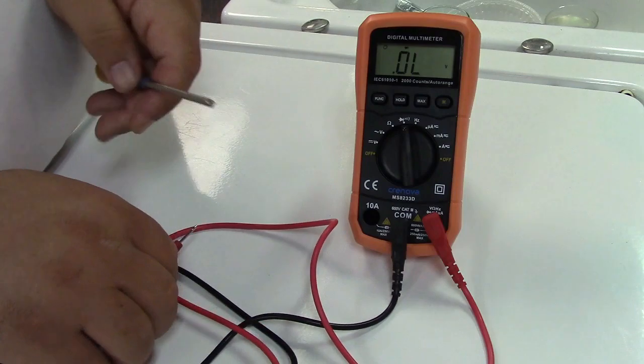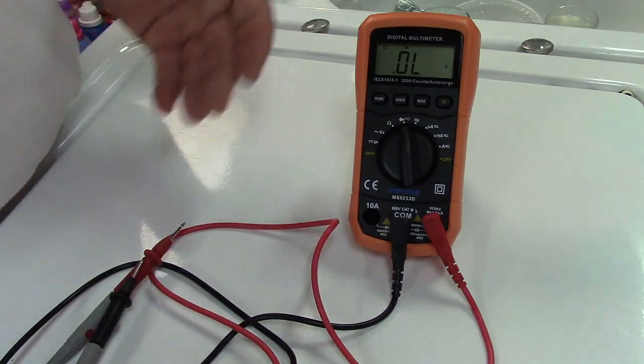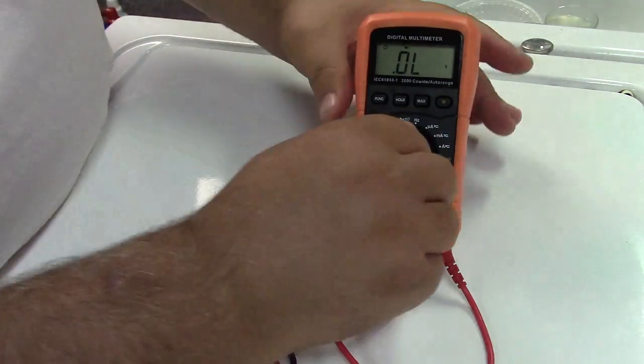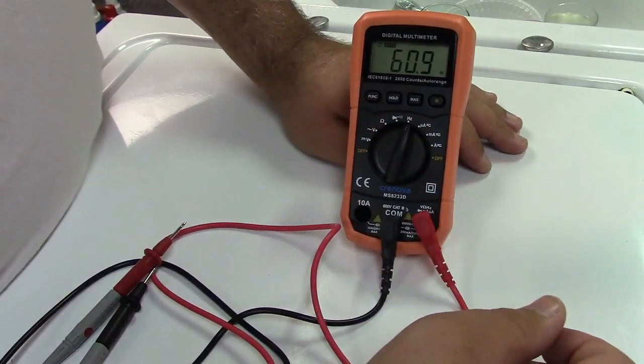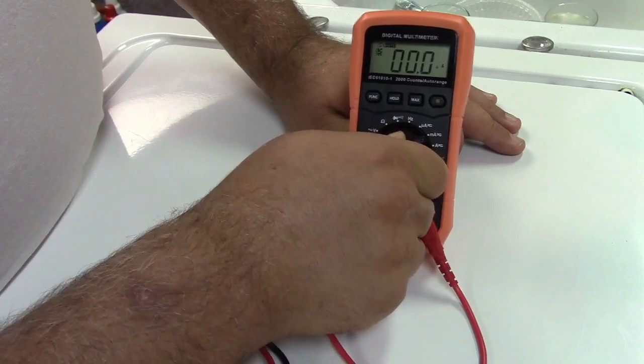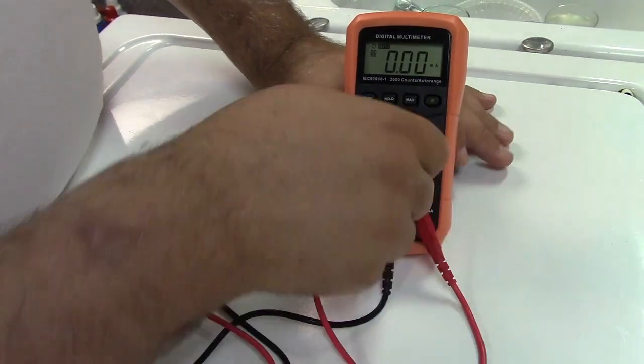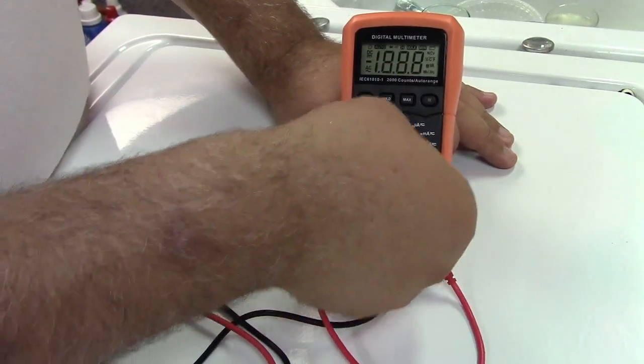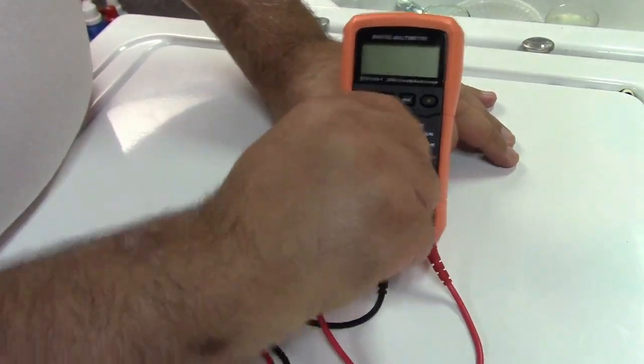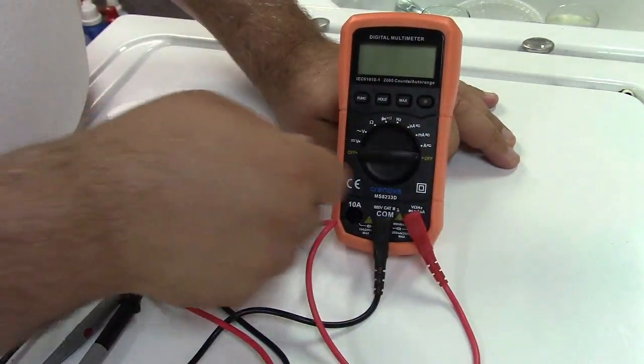You can measure other things with this. If you had a resistor that you needed the value of, you could turn it to ohms. It will also measure hertz or cycles per second. And then you have your amp range. There's also an off at each side, so you can turn it off either way, whatever is most convenient.